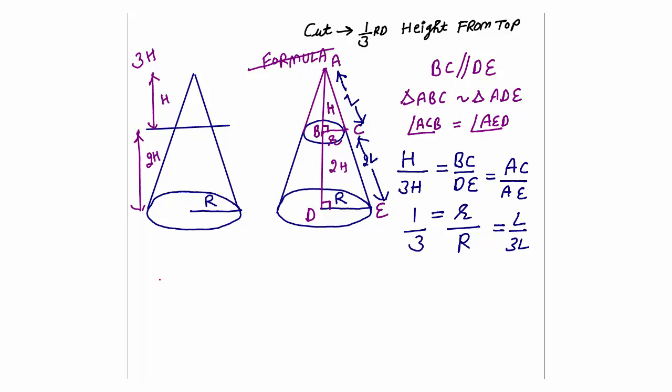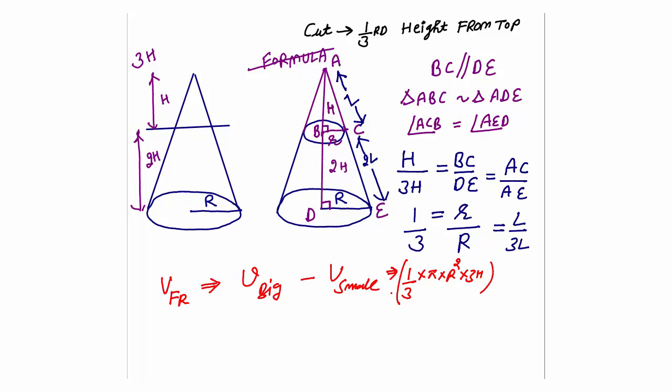Once you derive this, you can derive all formulas. For the volume of frustum: volume of frustum = volume of big cone minus volume of small cone. Volume of big cone is (1/3)π R² × 3H, where capital R is the radius and 3H is the height of the big cone. Minus (1/3)π r² × H, where small r and H are the radius and height of the smaller cone. You can always calculate the volume of frustum — no need to cram any formula.